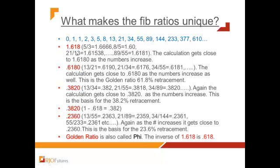Here's the calculation for those curious about how 0.618, 0.3820, or 0.2360 — and the golden ratio — are derived. Basically, if you take 5 divided by 3 in the sequence, and keep doing that up to 89 divided by 55, you get 1.6181. The inverse of that is 0.6180.